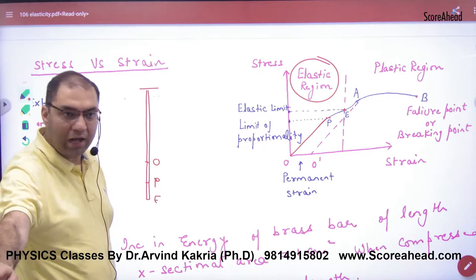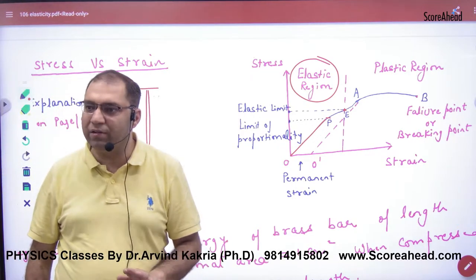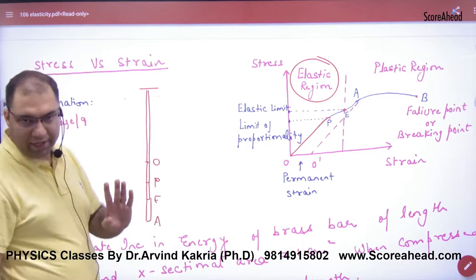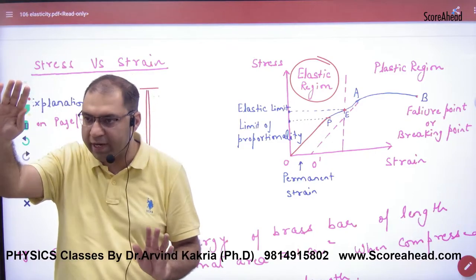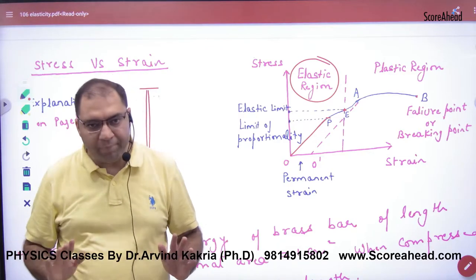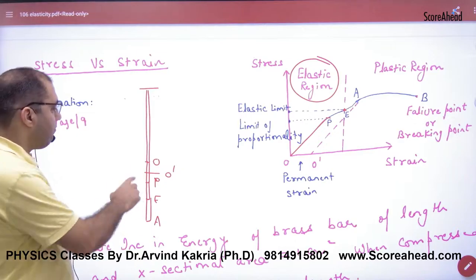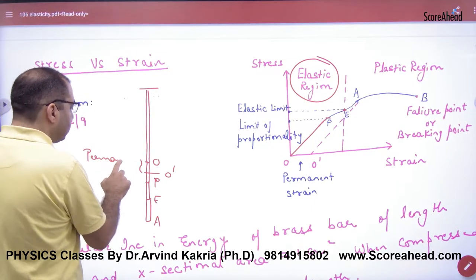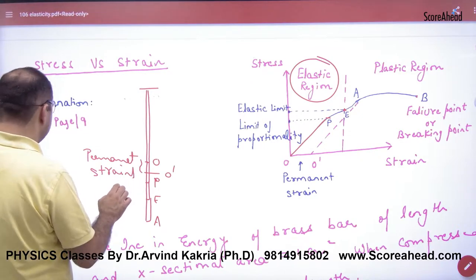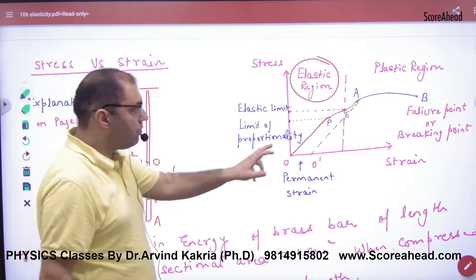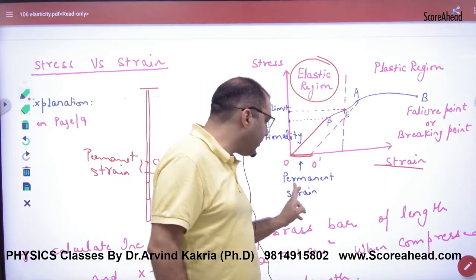When you go beyond point A — past the elastic limit — the wire will never return to O. The wire becomes permanently longer because you have crossed its elastic limit and it has lost its elasticity. A permanent strain is produced. When you release the wire, it returns only to O-prime, not the original O — that O-prime represents permanent strain.